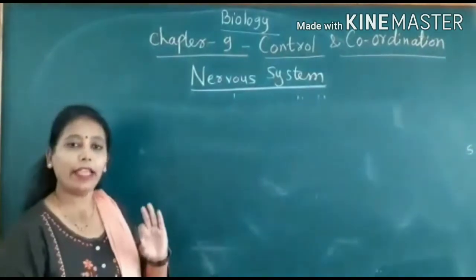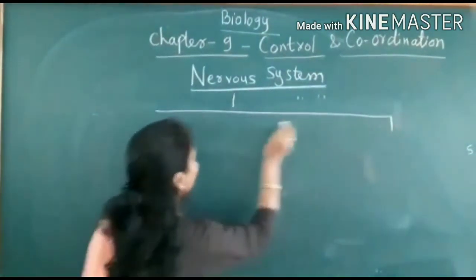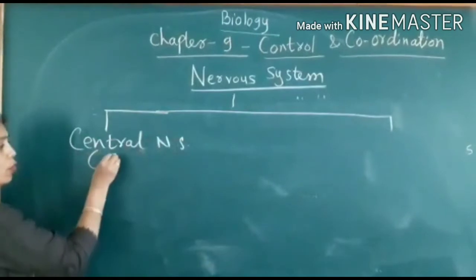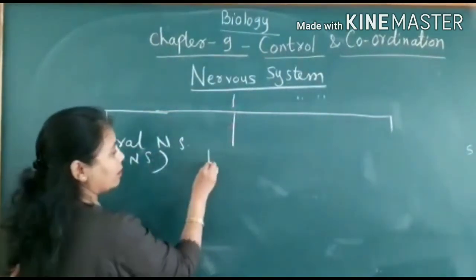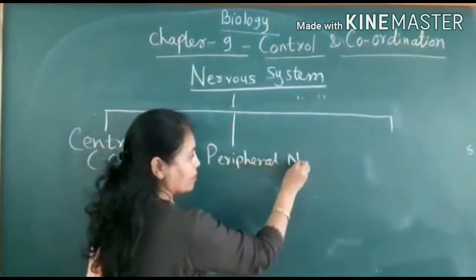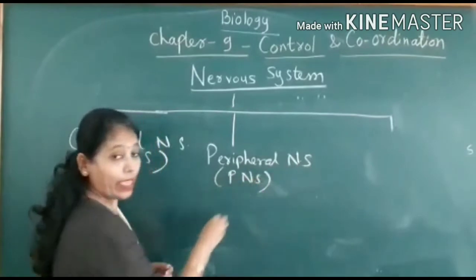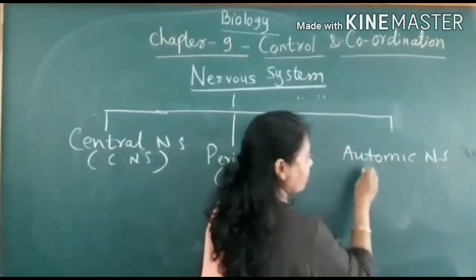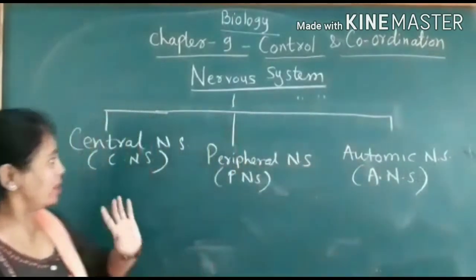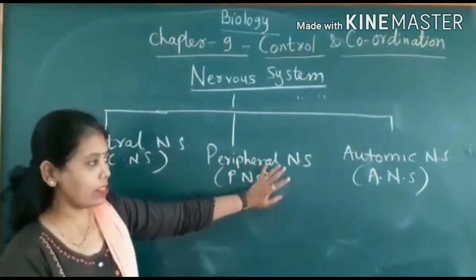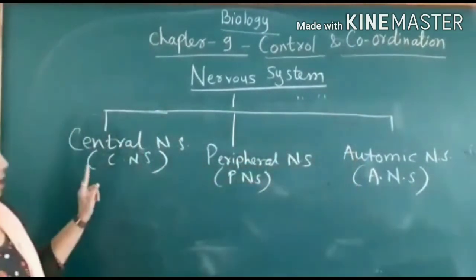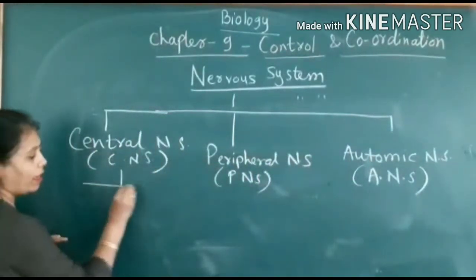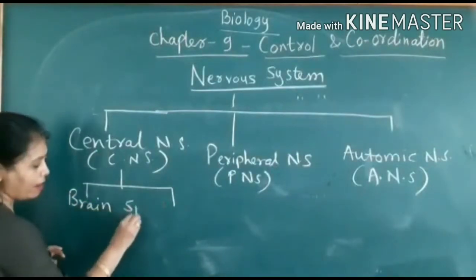The nervous system is divided into three parts. The first is called the central nervous system, also called CNS. The second is the peripheral nervous system, also called PNS. The third is the autonomic nervous system, also called ANS. The central nervous system consists of the brain and spinal cord.